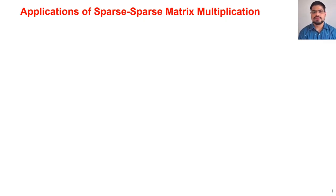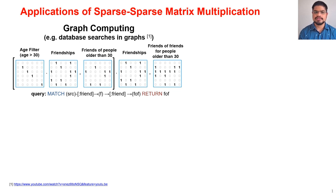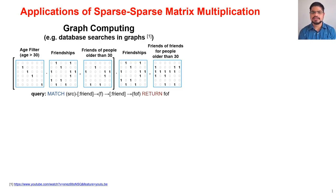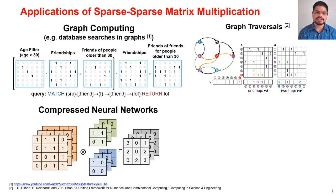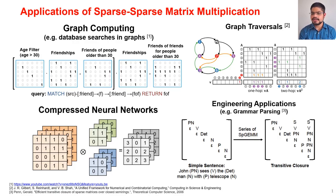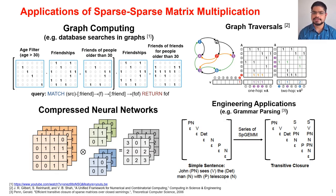There are numerous applications of sparse sparse matrix multiplication, such as in graph databases. For example, a query of finding friends of friends of people whose age is greater than 30 can be performed by doing a series of sparse sparse matrix multiplies. Similarly, other algorithms in graph traversals, sparse compressed neural networks, and emerging engineering applications such as grammar parsing can be accomplished by performing sparse sparse MM.